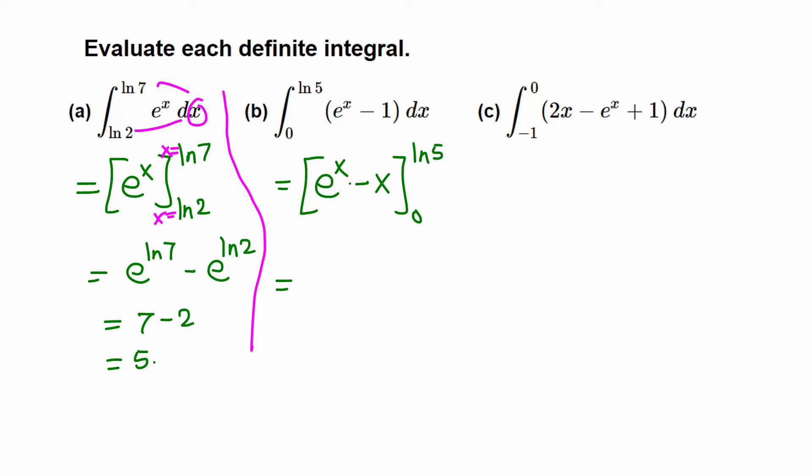Replace x by ln5, so e raised to ln5 minus ln5 - that's the upper limit. Since we have two terms, I'm going to put negative and parenthesis for the lower limit 0: e raised to 0 minus 0.